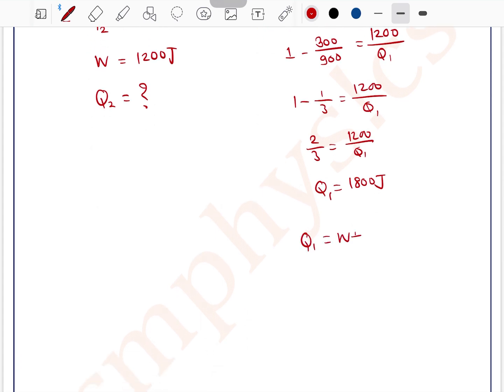According to law of conservation of energy Q1 is equal to W plus Q2, so this 1800 is equal to 1200 plus Q2.